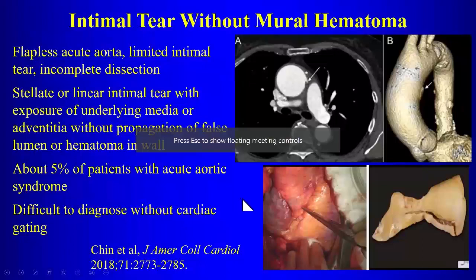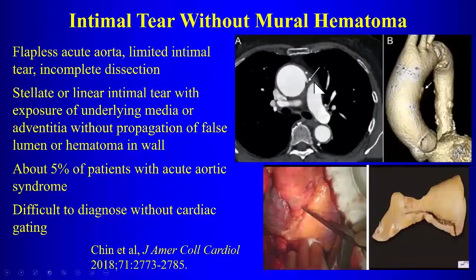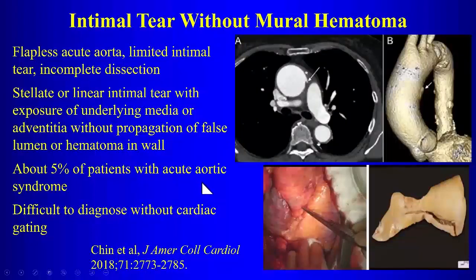The rarest form of intimal disruption is an intimal tear without intramural hematoma, also called flapless acute aortic dissection, limited intimal tear, or incomplete dissection. There is a tear in the intima exposing the media or adventitia without a false lumen or hematoma in the wall. This is very difficult to diagnose on CT; it may be visible on cardiac-gated CT as a subtle defect, but generally is not diagnosed by CT. It occurs in about 5% of patients with acute aortic syndrome.